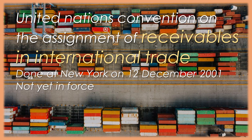Article 14. Right to payment. 1. As between the Assigner and the Assignee, unless otherwise agreed and whether or not notification of the assignment has been sent: a. if payment in respect of the Assigned Receivable is made to the Assignee, the Assignee is entitled to retain the proceeds and goods returned in respect of the Assigned Receivable; b. if payment in respect of the Assigned Receivable is made to the Assigner, the Assignee is entitled to payment of the proceeds and also to goods returned to the Assigner in respect of the Assigned Receivable; and c. if payment in respect of the assigned receivable is made to another person over whom the assignee has priority, the assignee is entitled to payment of the proceeds and also to goods returned to such person in respect of the assigned receivable. 2. The assignee may not retain more than the value of its right in the receivable.